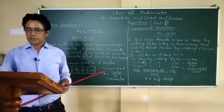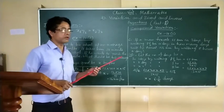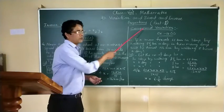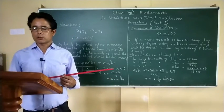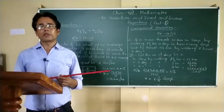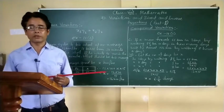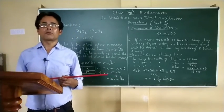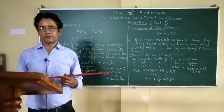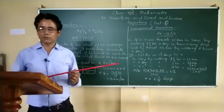Now the next is compound variation. There are many problems including more than one variation, where there is more than one variation in which more than two different types of quantities are used. We will understand this with the help of an example.